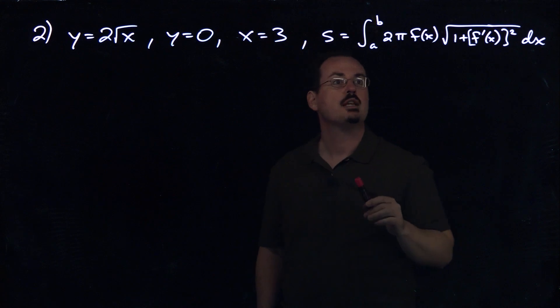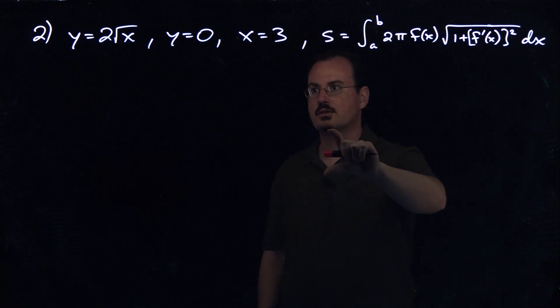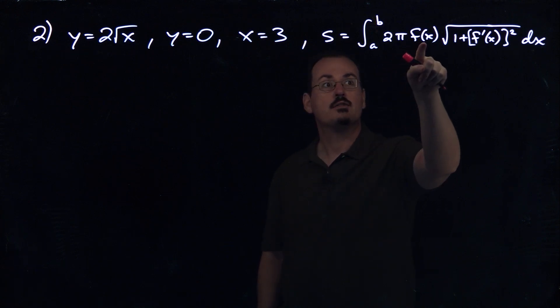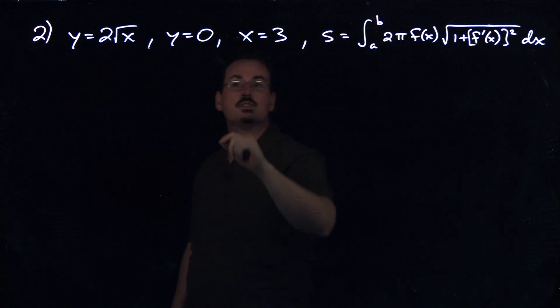So this is the formula we have to use for that. Remember that since we're revolving around the x-axis, the vertical distance from the axis to the surface would be the function itself. So that's why we get the f of x there instead of just the x.